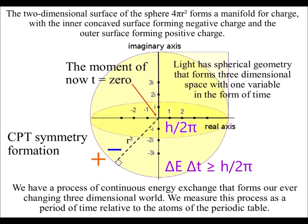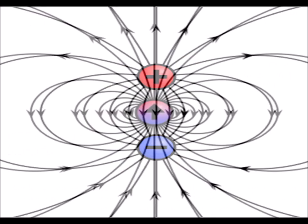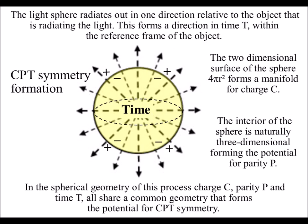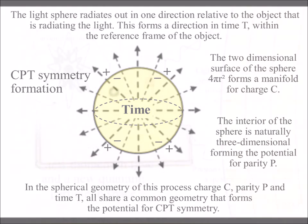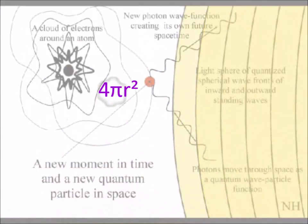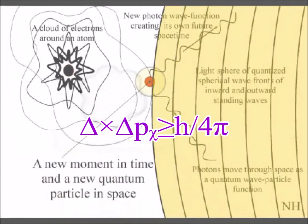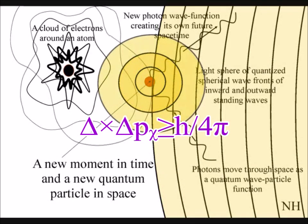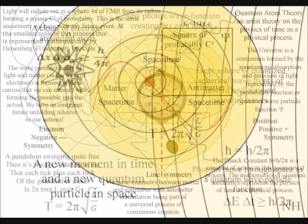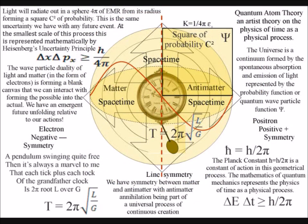The two-dimensional surface of the sphere forms a manifold or boundary condition for positive and negative charge. The inner concave surface forms negative charge, and the outer surface forms positive charge. Light radiates out as a sphere, and when the surface of the sphere comes in contact with the electron probability cloud of an atom, it forms a photon-electron coupling and our three-dimensional world changes with the movement of positive and negative charge.